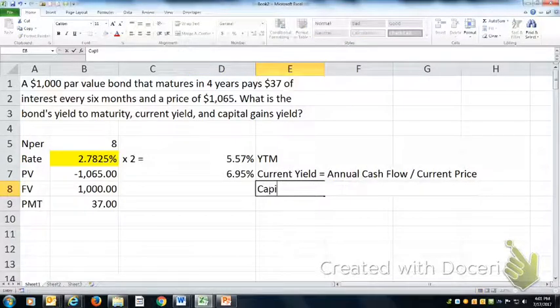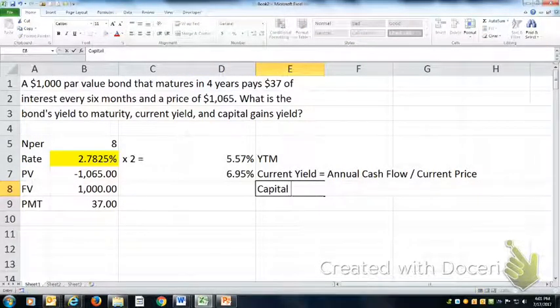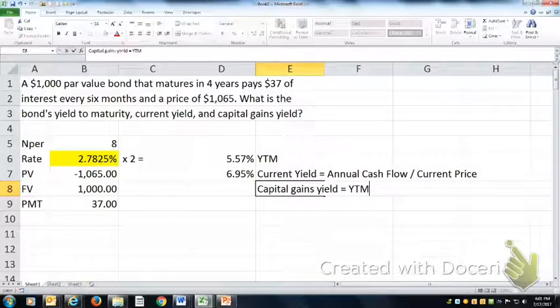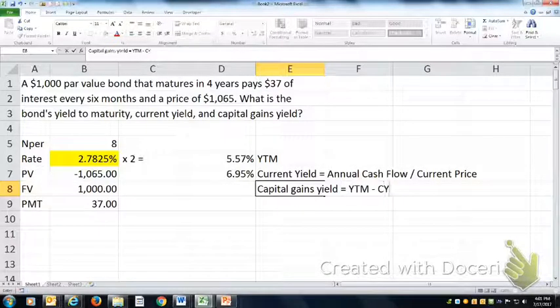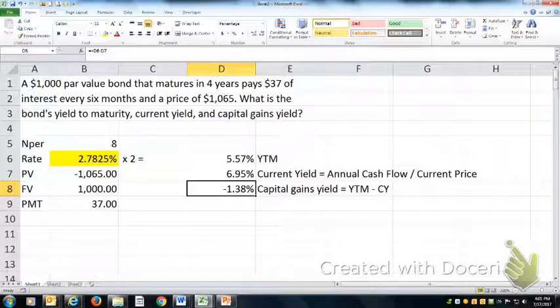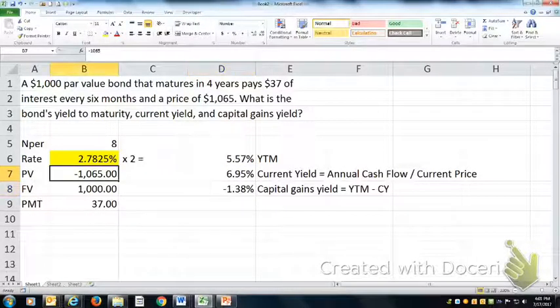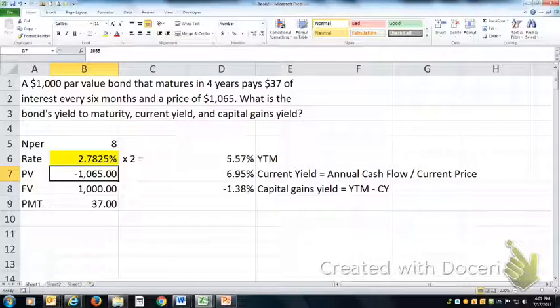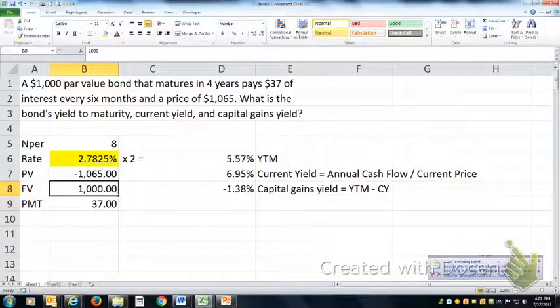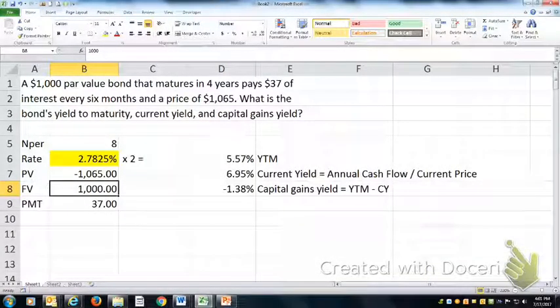The capital gains yield is simply equal to the yield to maturity minus the current yield. And it's a negative capital gains yield because we know as the bond matures, the price will drop from $1,065 to $1,000, holding all else constant. BAM! BAM!